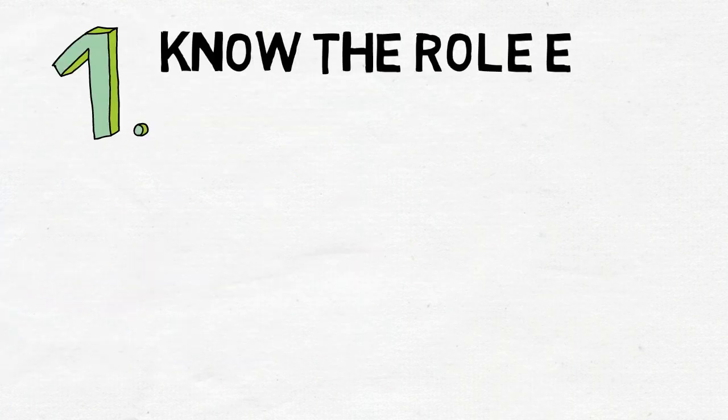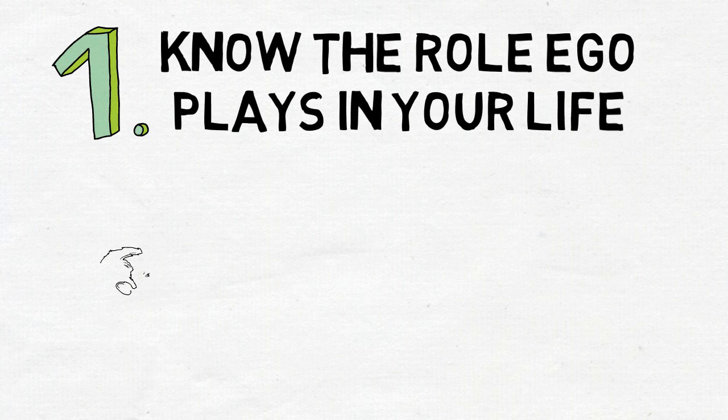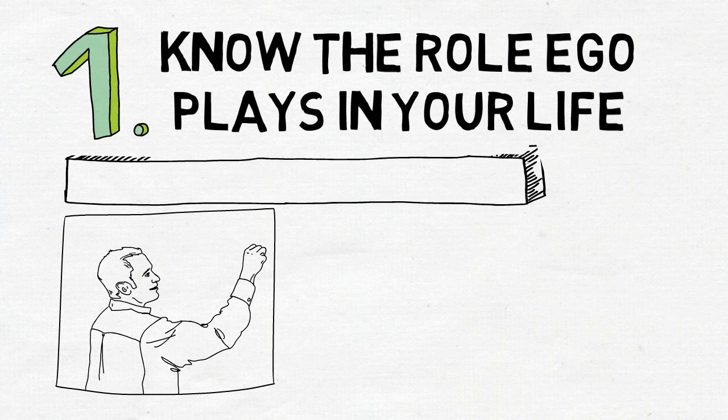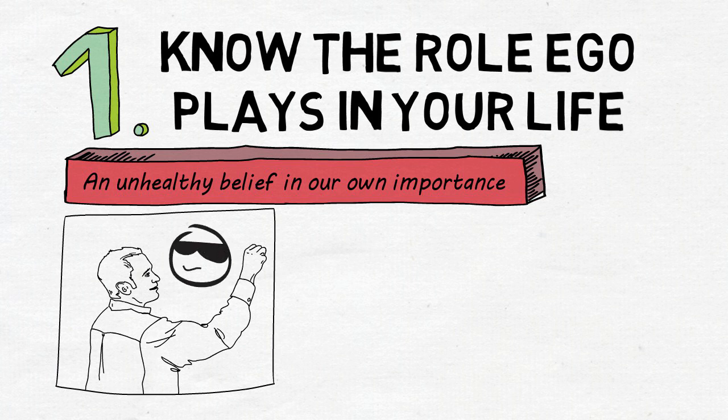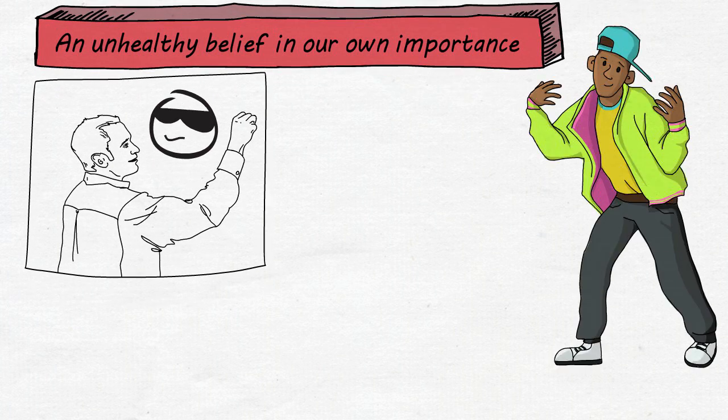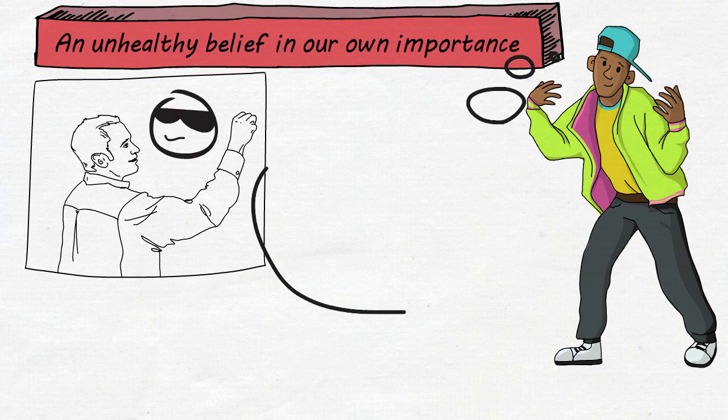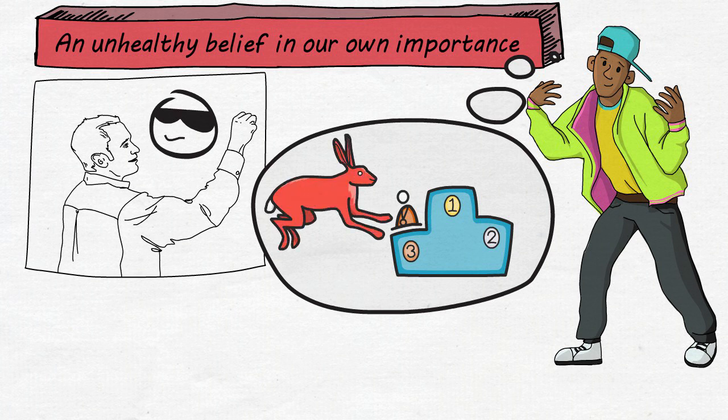Number one, know the role ego plays in your life. To illustrate how ego is the enemy, Ryan Holiday starts by defining what ego means. The ego we see most commonly goes by a more casual definition: an unhealthy belief in our own importance, arrogance, self-centered ambition. It's the petulant child inside every person, the one that chooses getting his or her way over anything or anyone else. The need to be better than, more than, recognized for, far past any reasonable utility. That's ego.